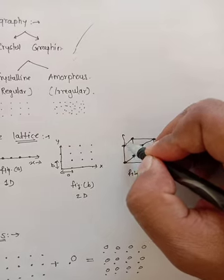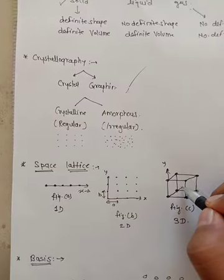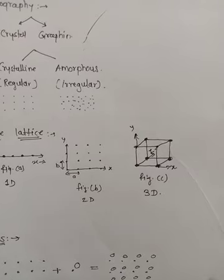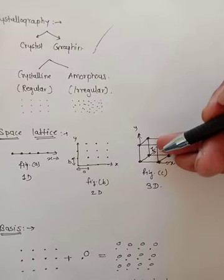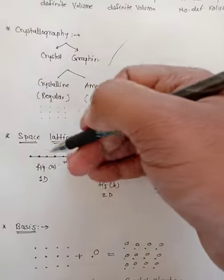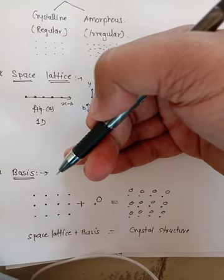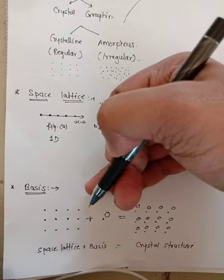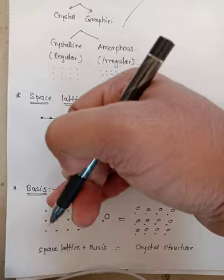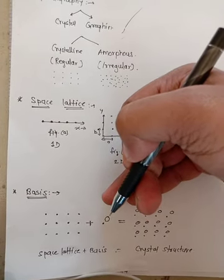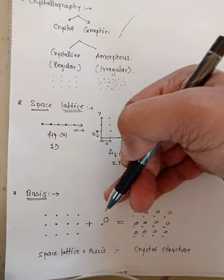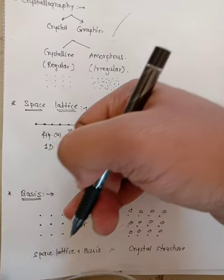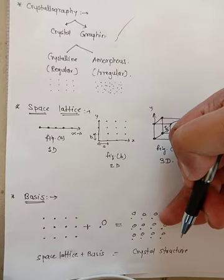The third figure shows the three-dimensional space lattice, showing how the particles are arranged in the x, y, and z planes. So this is the three-dimensional, this is the two-dimensional, and this is the one-dimensional space lattice. Our next concept is basis. Whenever a single atom or a group of atoms is attached with every lattice point in a space lattice, such an arrangement is called a basis.